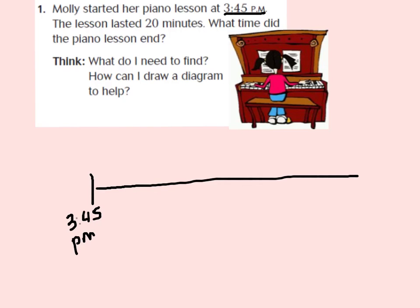I know that it lasted 20 minutes, so I'm going to be adding to my start time. Since the lesson only lasted 20 minutes and I didn't go up a full hour, I'm going to count up in increments of 5 minutes. Each line is going to represent 5 minutes that has gone by.